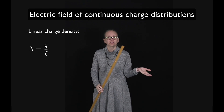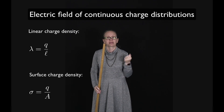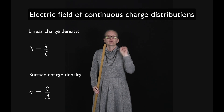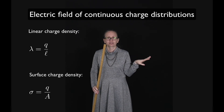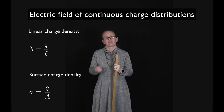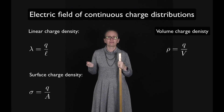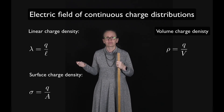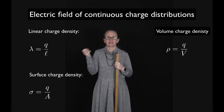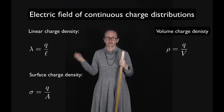For a two-dimensional object — a surface — we use the surface charge density, represented by the Greek letter sigma. Sigma is equal to Q divided by A, where Q is the total charge on the surface and A is the total surface area. For a three-dimensional object, we use the volume charge density, represented by rho. Rho is equal to Q divided by V, where Q is the total charge and V is the volume.